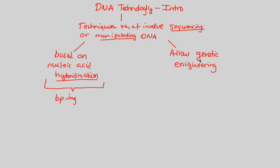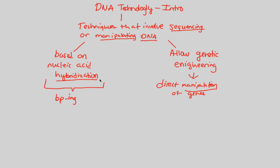The DNA technology we currently have gives us the ability to engineer genes — to physically and directly manipulate genes — the direct manipulation of genes. This is a huge topic of debate in science today: figuring out the laws around direct manipulation of genes, because this is the direct manipulation of life's blueprint in terms of DNA. Overall, this lecture will focus on techniques based on base pairing — nucleic acid hybridization — which allows us to genetically manipulate things through genetic engineering concepts we'll cover as we move forward.